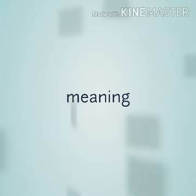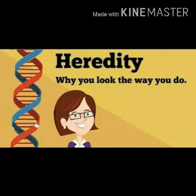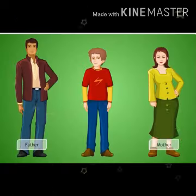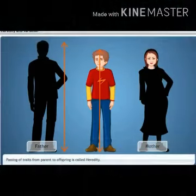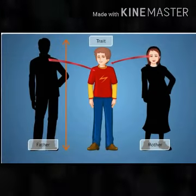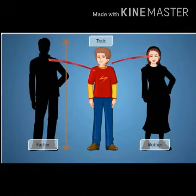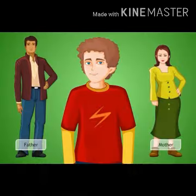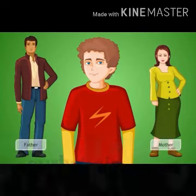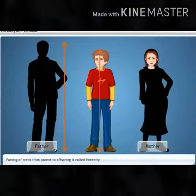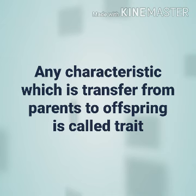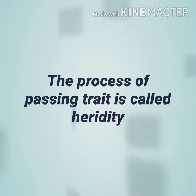Let us first understand the meaning of Heredity. It means transfer of biological characters from one generation to another. For example, this boy resembles his mother in skin color and father in height. This is because the boy has received the gene from both parents — the gene for height from his father and the gene for skin color from his mother. Any characteristic which is transferred to offspring, such as height and color, is known as a trait. This process of passing traits from parents to offspring is called heredity.